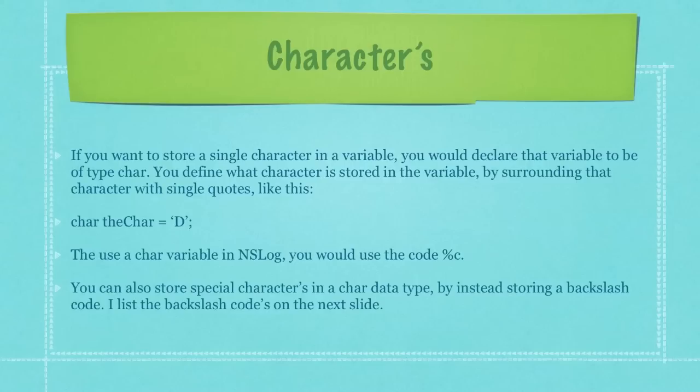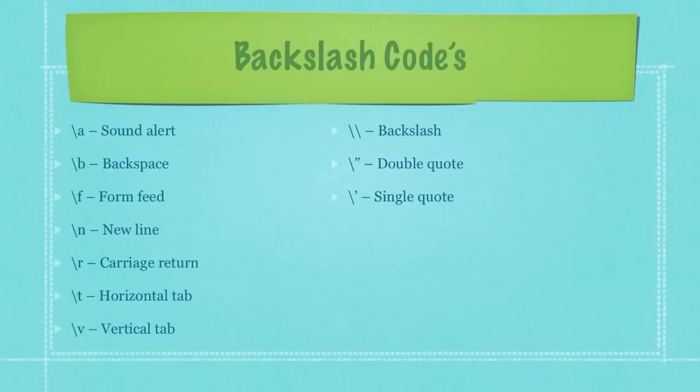You can also store special characters in a character data type by instead storing a backslash code, and I'll list the backslash codes here on the next slide. Here you can see all of the backslash codes available to you. If you wanted to store them in a variable of type character, you would just include the backslash followed by the letter you can see here on the screen, and of course, you would use single quotations.